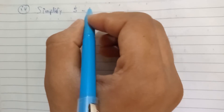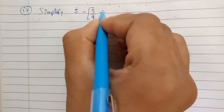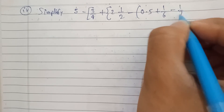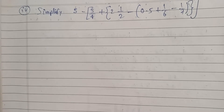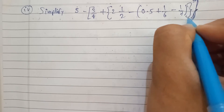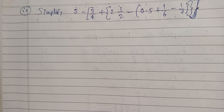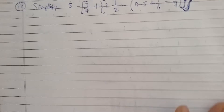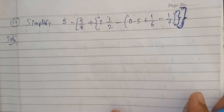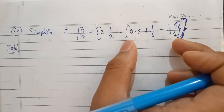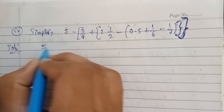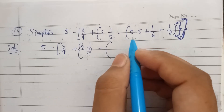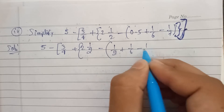Simplify: 5 minus bracket 3/4 plus bracket 2 and 1/2 minus 0.5 plus bracket 1/6 minus 1/6 minus 1/7 close all brackets. First we need to check the brackets, solving from the innermost. The innermost bracket contains 1/2 plus 1/6 minus 1/7. We note down 5 minus, and inside plus 2 and 1/2 minus 0.5, and then we take LCM of 2, 6, and 7.